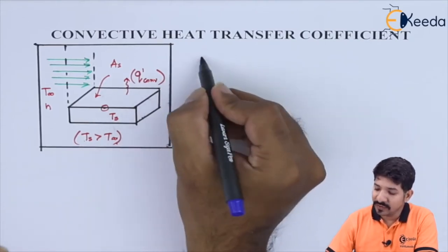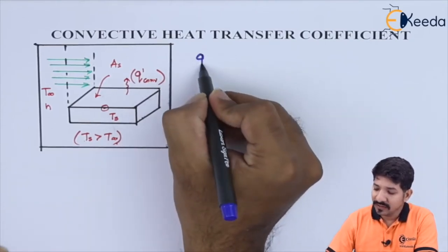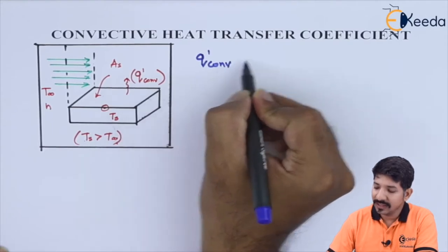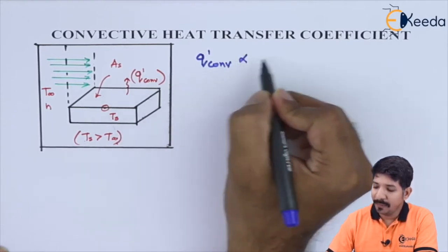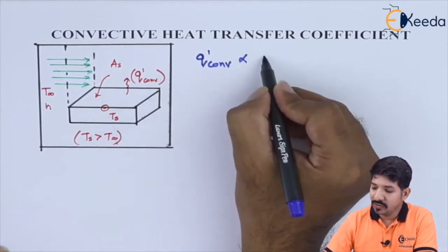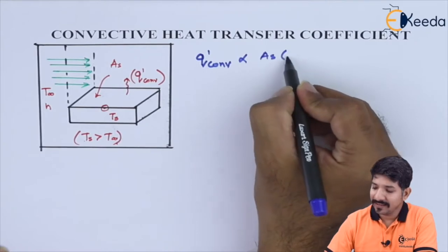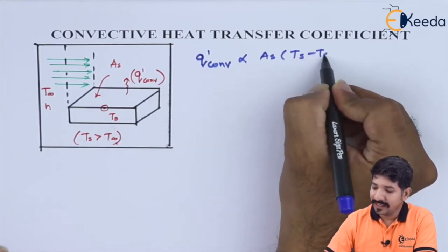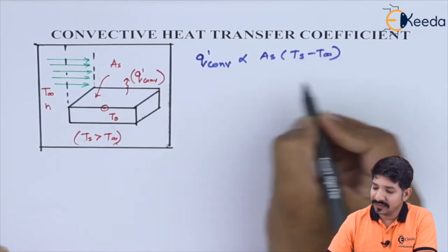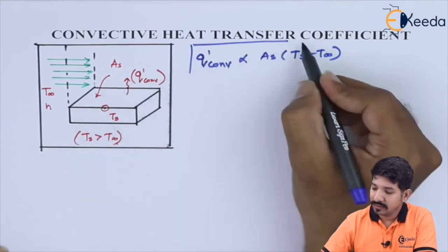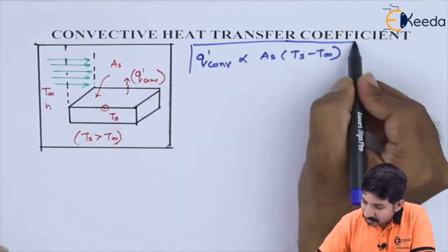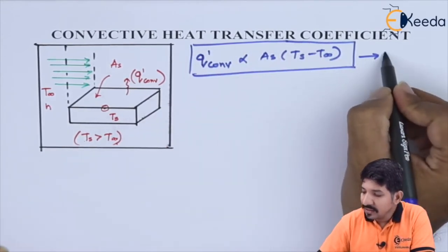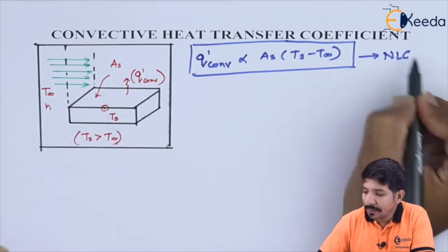By Newton's law of cooling, Q' convection is directly proportional to As and (Ts − T∞). This is Newton's law of cooling.